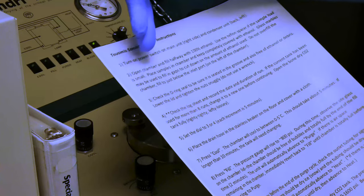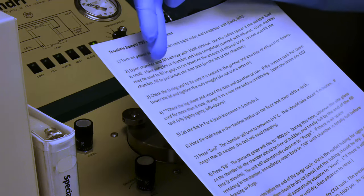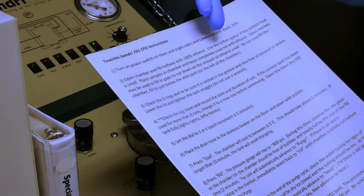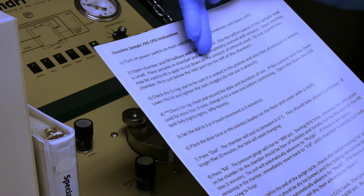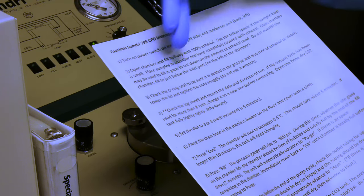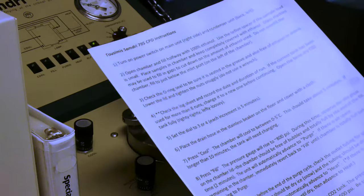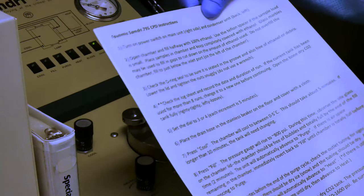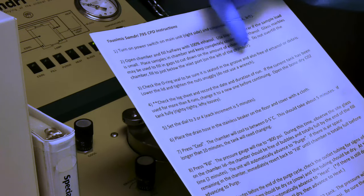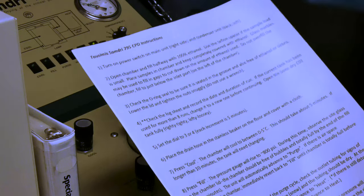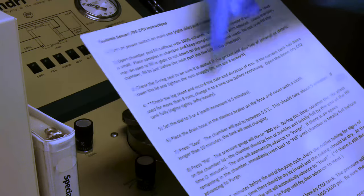So we have worked on step two by opening the chamber, filling with ethanol. We've used this Teflon spacer. We've placed the samples in the chamber and have covered with glass marbles and ethanol. We used that to bring the ethanol volume just beneath the inlet port, which is on the left side of the chamber. We've also completed step three where we've checked the O-ring seal to make sure it is seated in the groove and free of any debris or ethanol. We've lowered the lids and tightened the nuts snugly. We're going to check the log sheet.